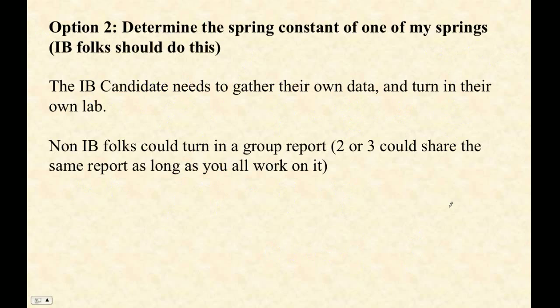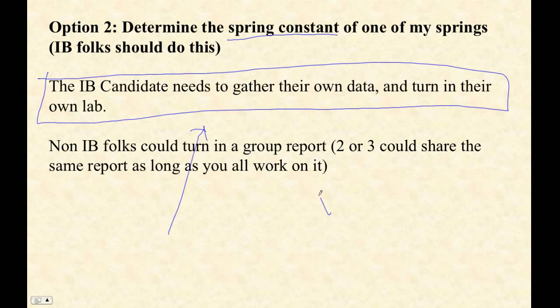There's a second option. The second option is that you could determine the spring constant of one of the springs. Now this sounds really easy, but it's unbelievably difficult the way IB wants us to do it. If you are IB, this is what you're going to do. If you're IB, you're going to do your very own, you're going to gather your very own data and turn in your very own lab. Now, you're going to, we're going to do this thing called the spring constant graph. Everybody's going to do that, and it involves making a graph. Here's force, and here's the distance, and then these points here have error bars on them.